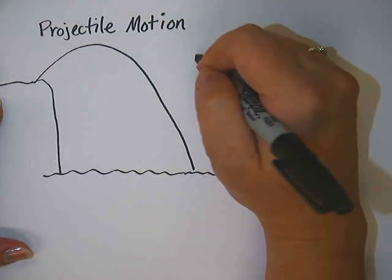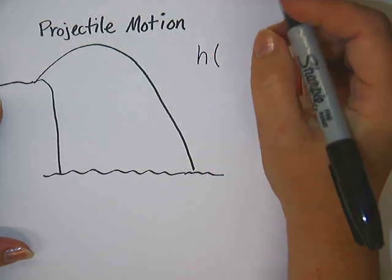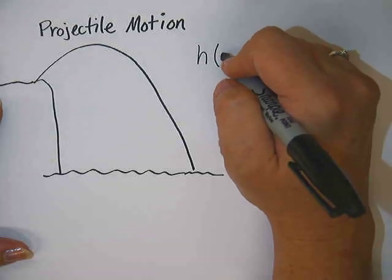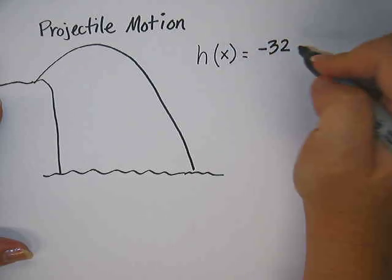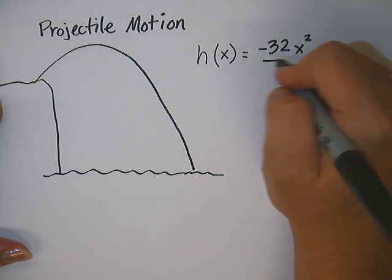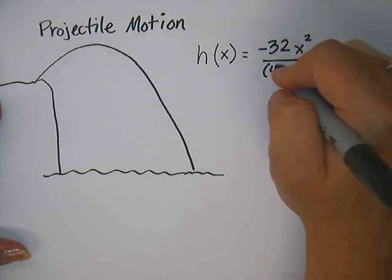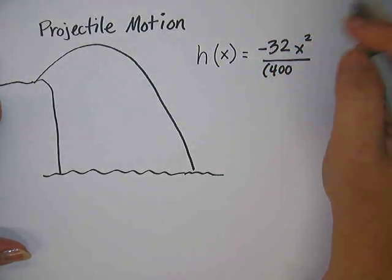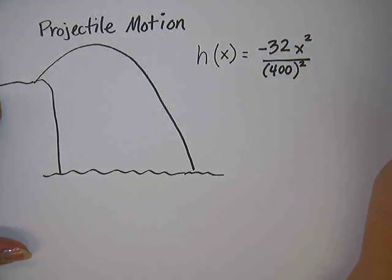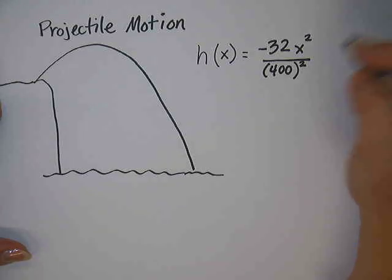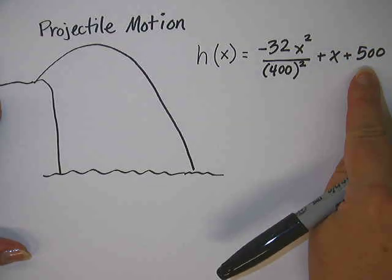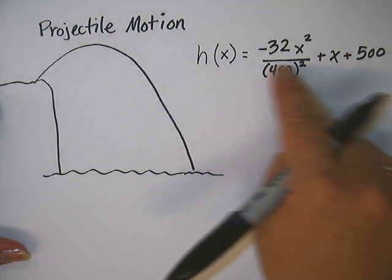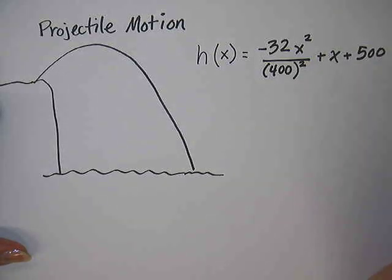And someone has determined that the function that represents the height of his path can be determined by this equation, this function here: negative 32x squared (32 comes from gravity) divided by 400 squared, so that could have just been done as a number like 1 over 60,000 or something like that, plus x plus 500. 500 is probably the height of the cliff. But we didn't have to figure this out, they just gave it to us.